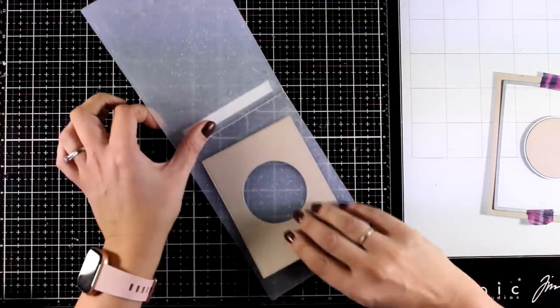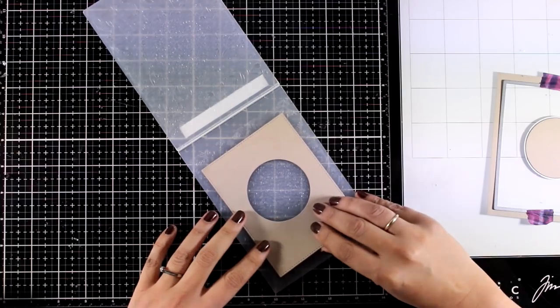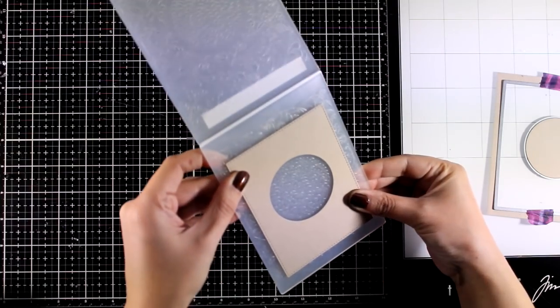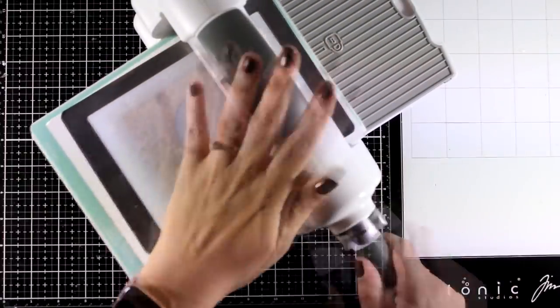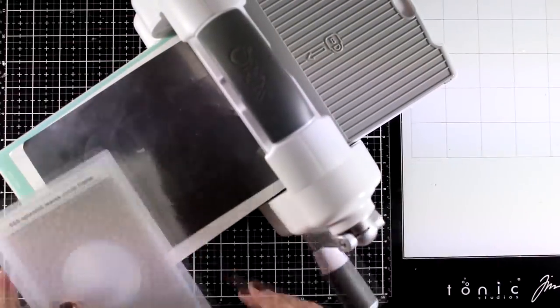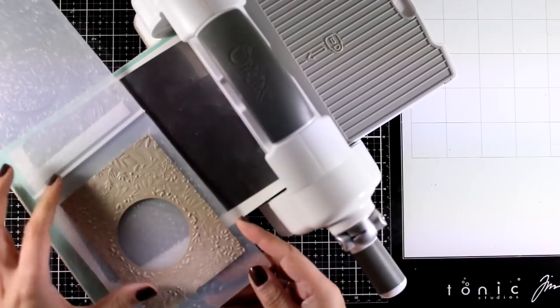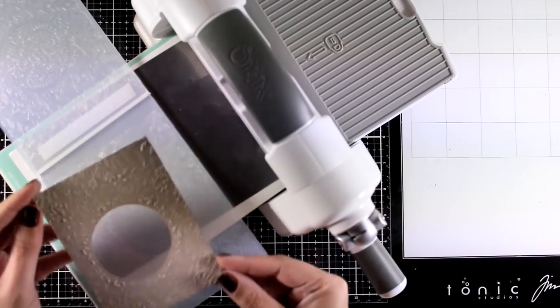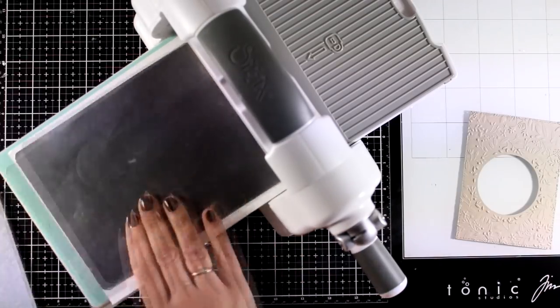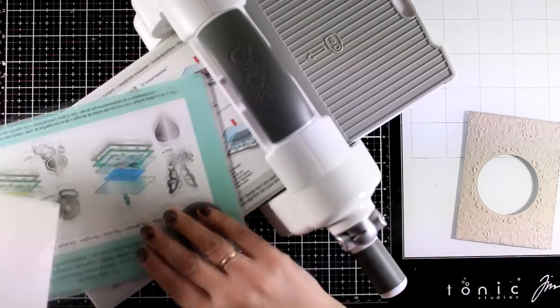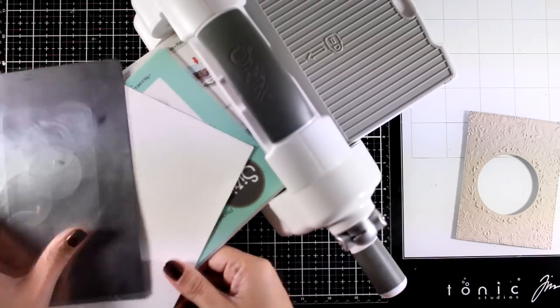I am going to align the window with the circle at the center and you can hold it up if you need to and then I'm going to run it through my die cutting machine. Now you have to play a little bit with your sandwich. So here I used my big shot. I got great results and the sandwich that I end up using was the embossing folder, a metal shim, a cardstock and the two main platforms.